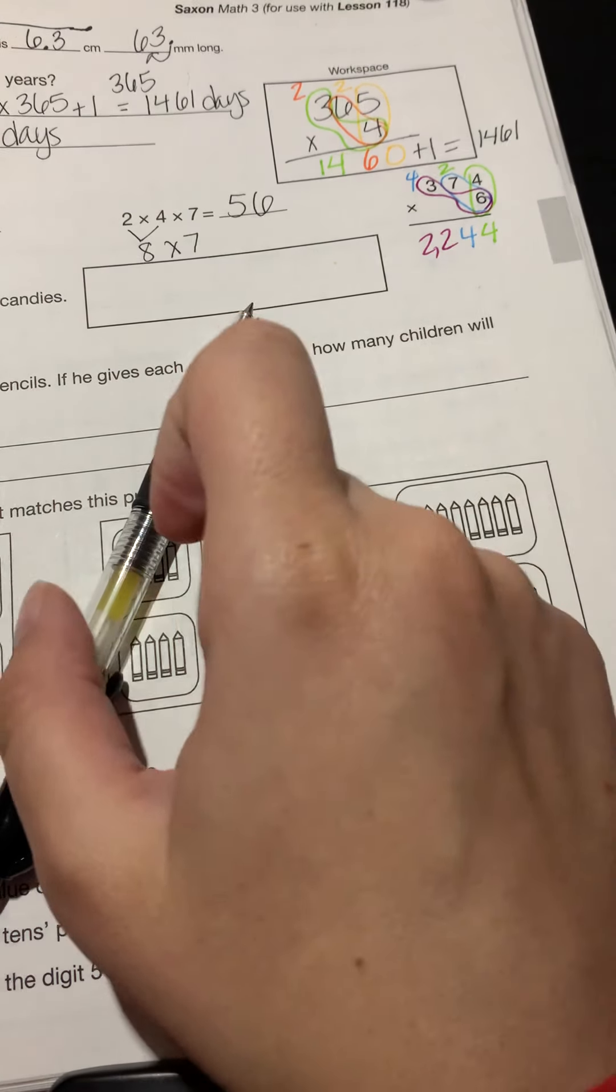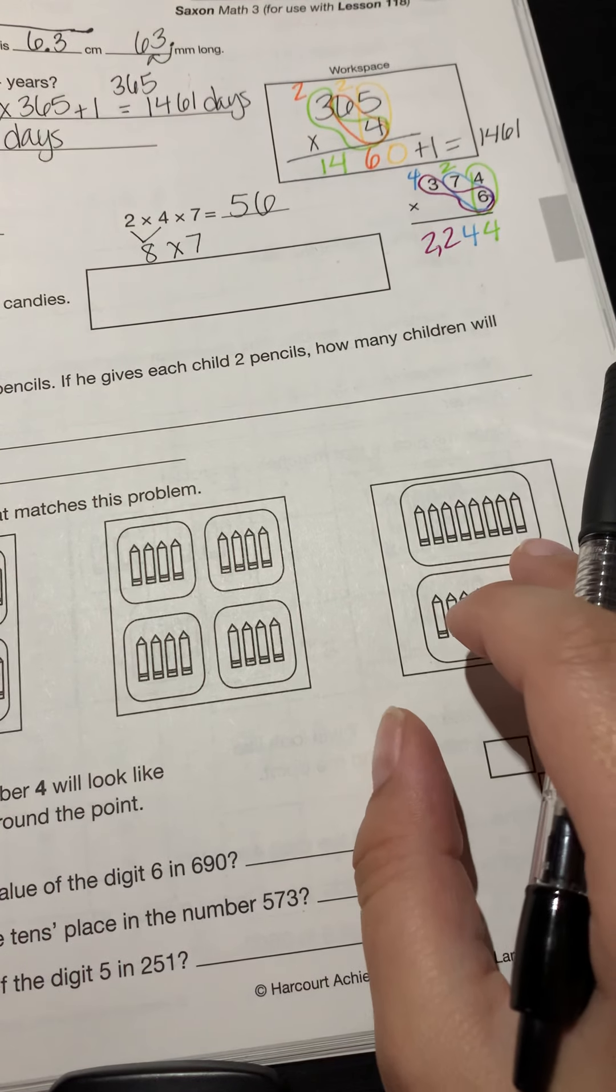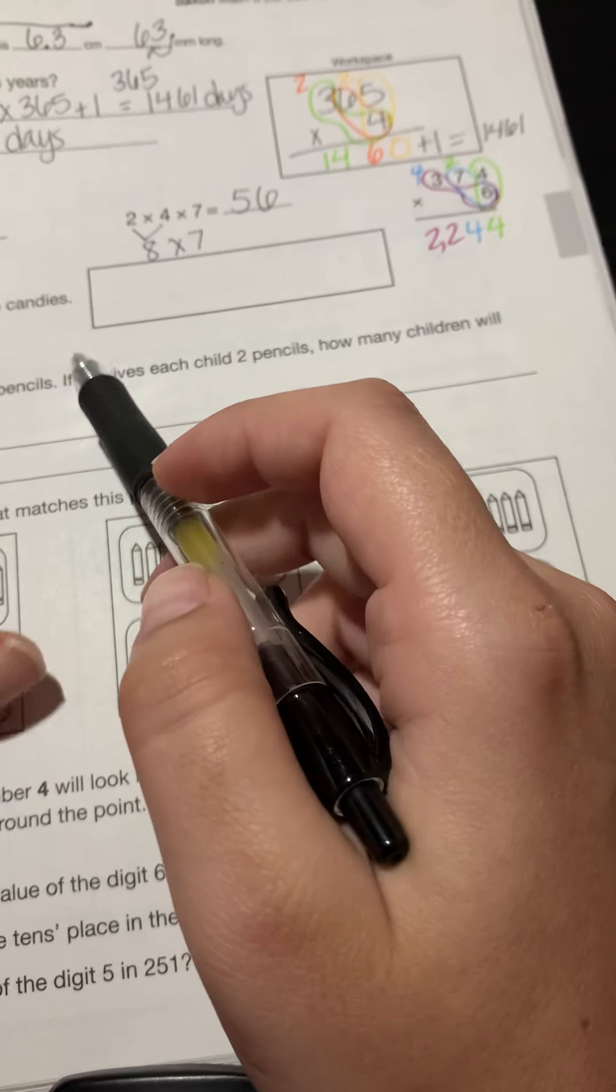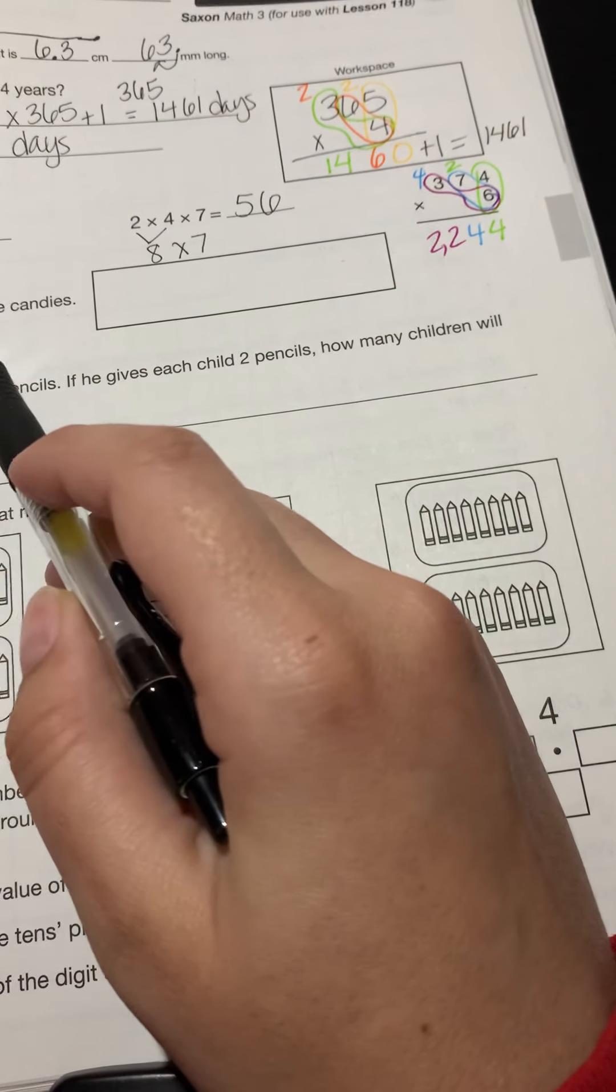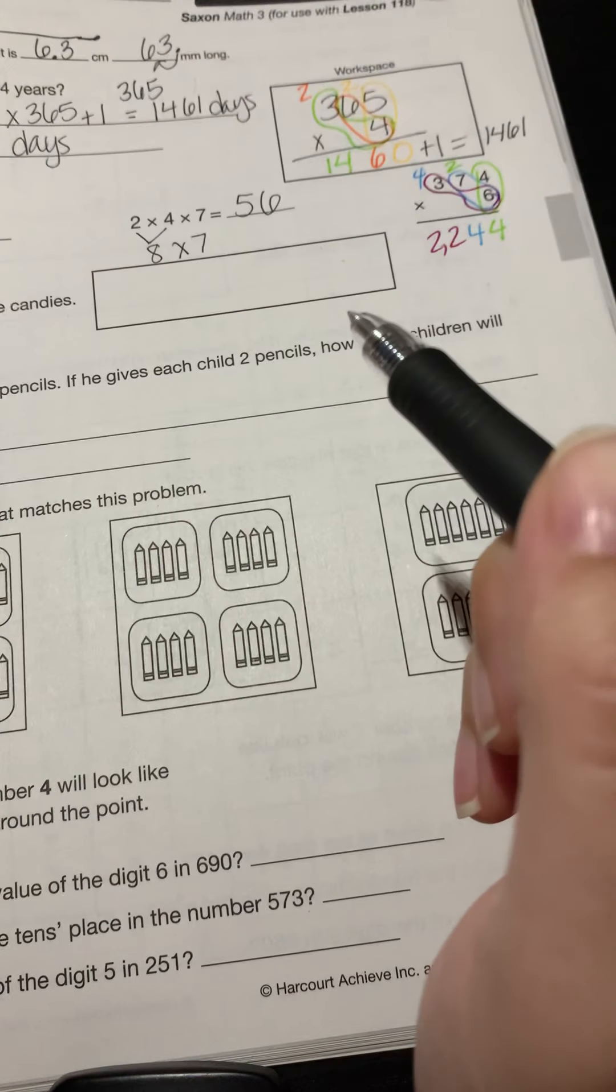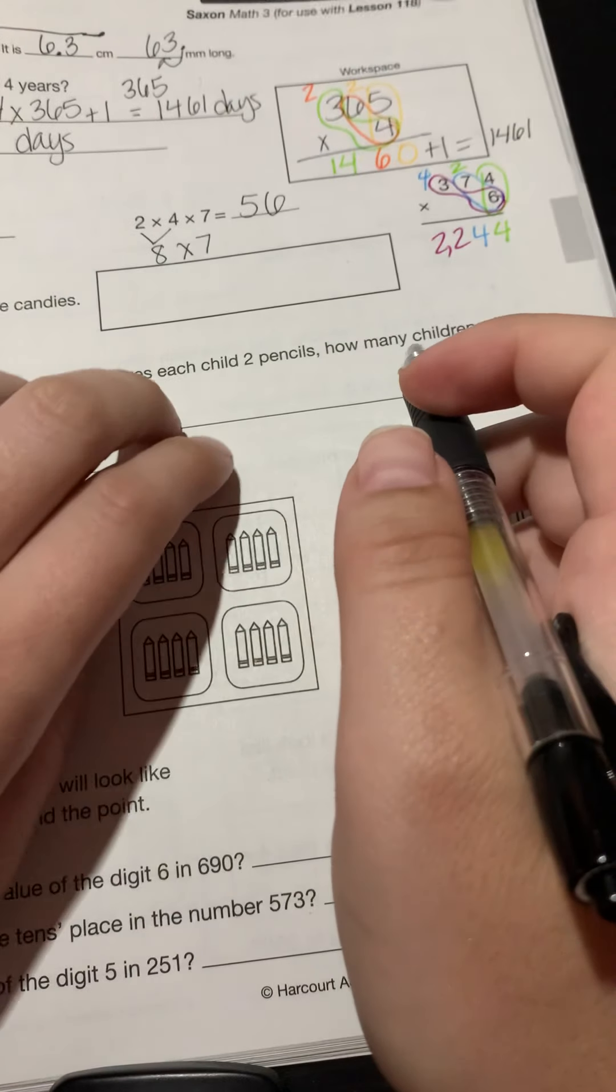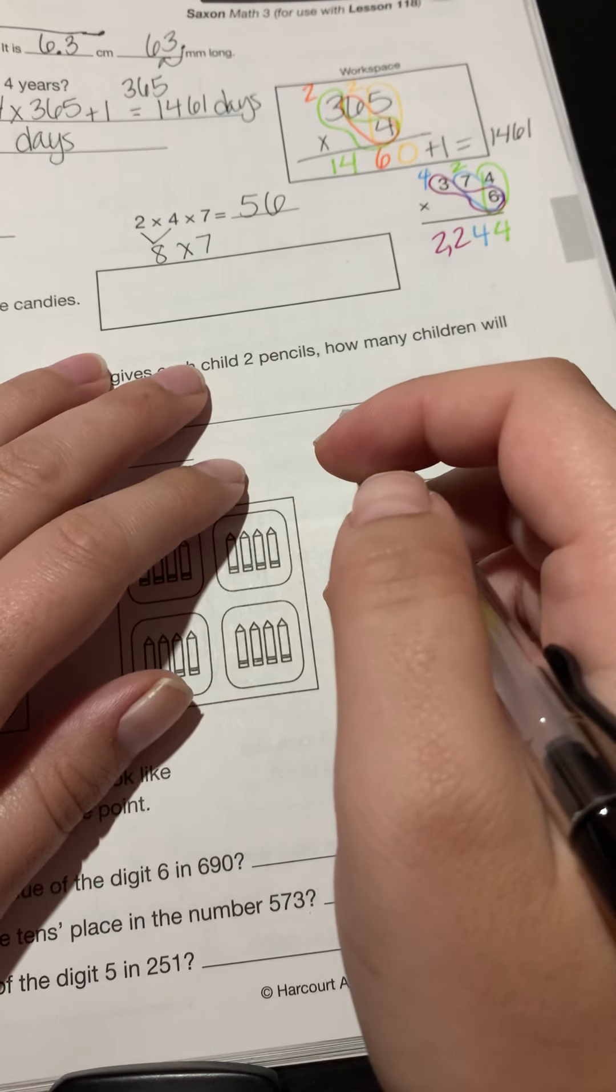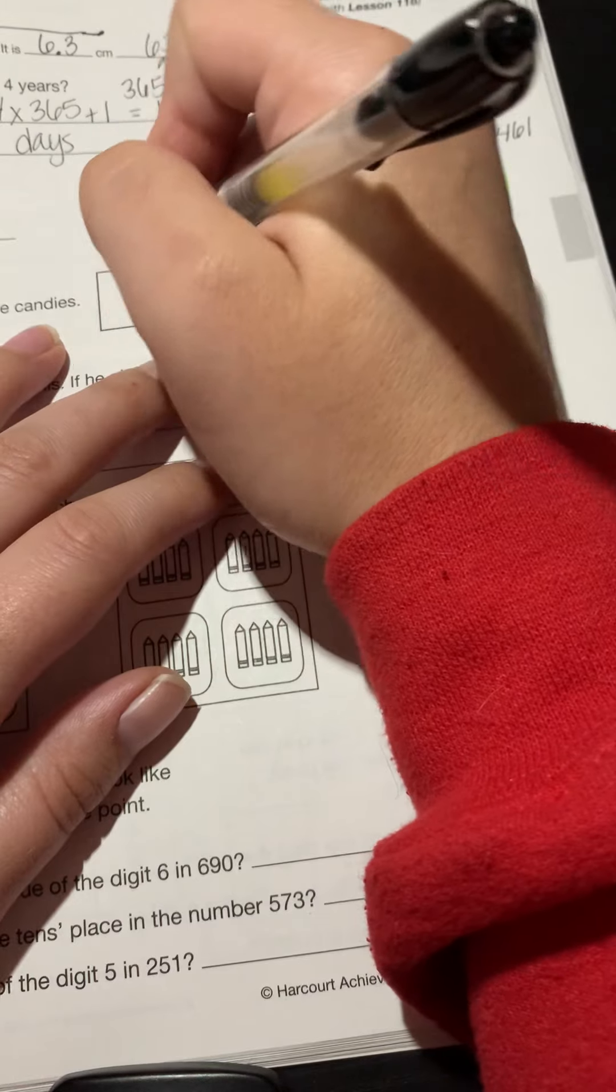Remember, use colored pencils or use colors if you need help keeping everything organized. All right, let's take a look at number three. It says, draw nine candies, circle one third of the candies. Okay, so how do we do this? We've got this big rectangle here. So why don't we go ahead and use the rectangle to help us out with this. So we're going to draw nine candies.